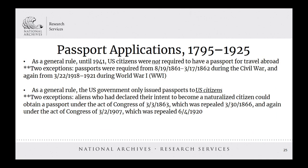There are some specific rules to keep in mind when searching for passport records. First, until 1941, U.S. citizens were not required to have a passport for travel abroad — two exceptions were brief periods during the Civil War and World War I. Second, the U.S. government only issued passports to U.S. citizens, with two exceptions: the years 1863 to 1866 and 1907 to 1920, when aliens who had declared their intent to become naturalized U.S. citizens could obtain a passport under congressional acts.